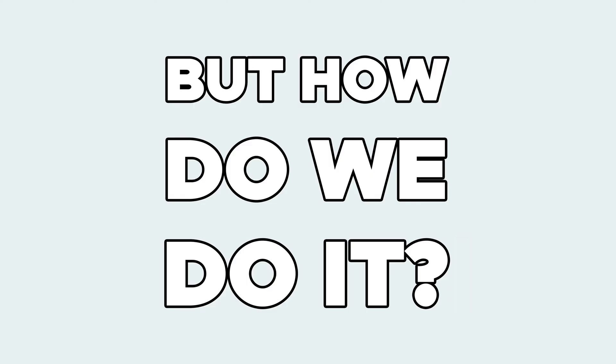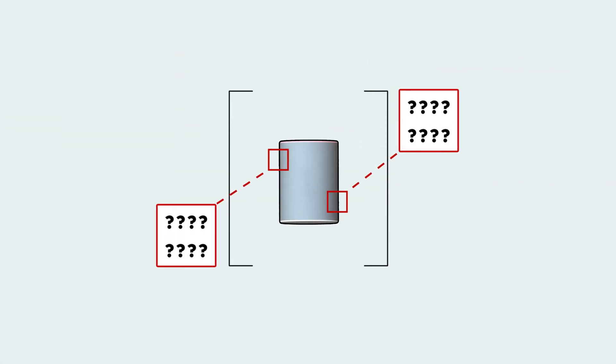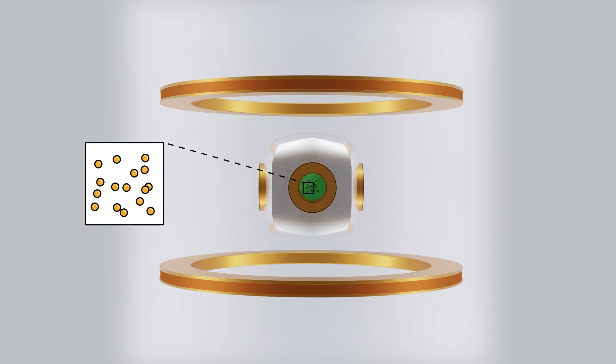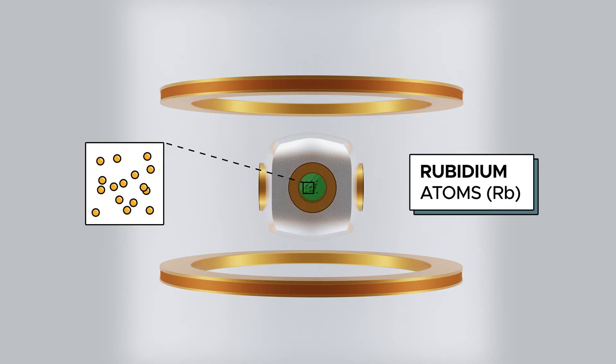But how do we do it? To answer that, let us take a closer look at the insides of the mysterious box that is Gravio. Inside the box sits a vacuum chamber containing a collection of rubidium atoms that are chilling around.